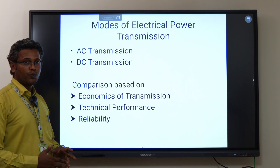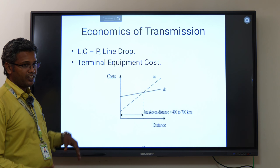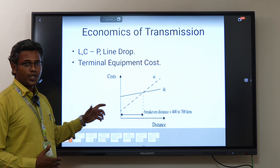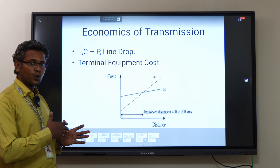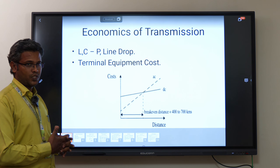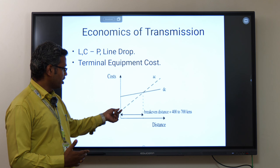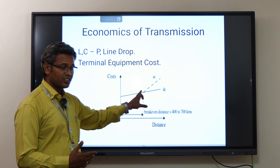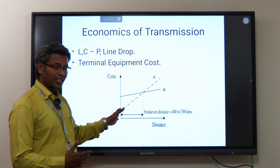First, we consider economic considerations — which one is more economical? With a simple graph, it is clear that cost versus distance is the key factor. For short distances, AC transmission is preferred. For long distances — for example, about 700 kilometers — DC transmission is preferred. Up to the break-even distance, the cost of AC transmission is less compared to DC.